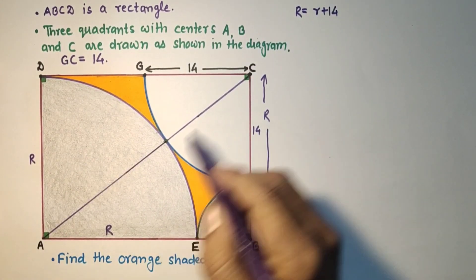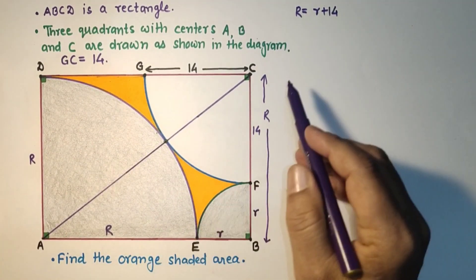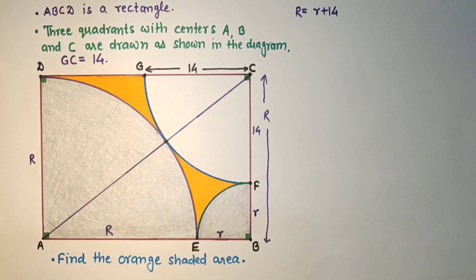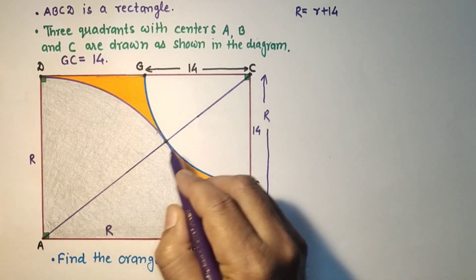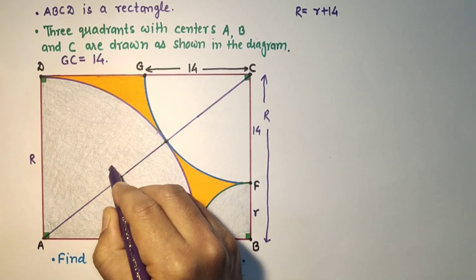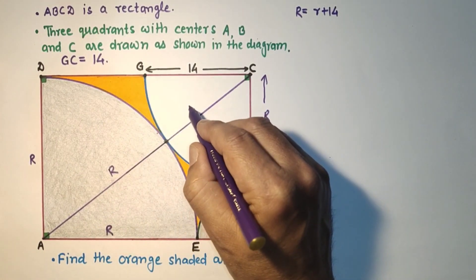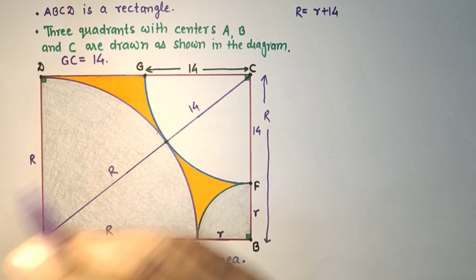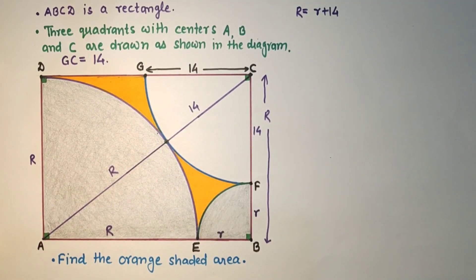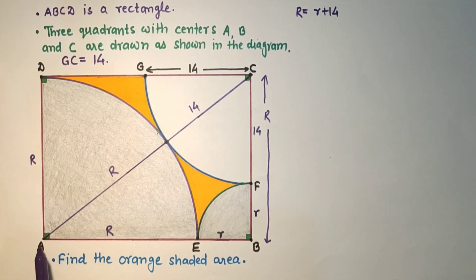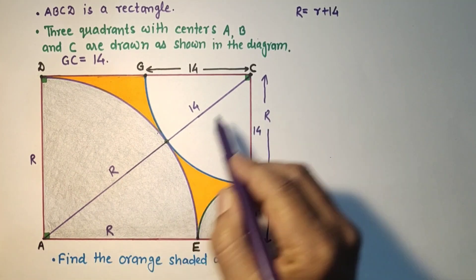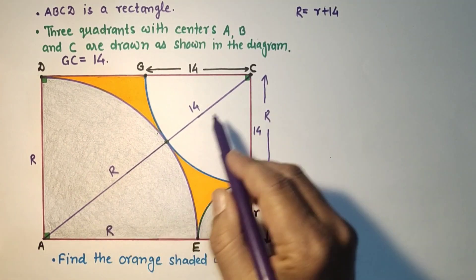If we join AC, this is the diagonal of the rectangle and this is R. This radius CG is 14. So we can use Pythagoras theorem in this right angle triangle ABC. This is the hypotenuse which is R + 14.